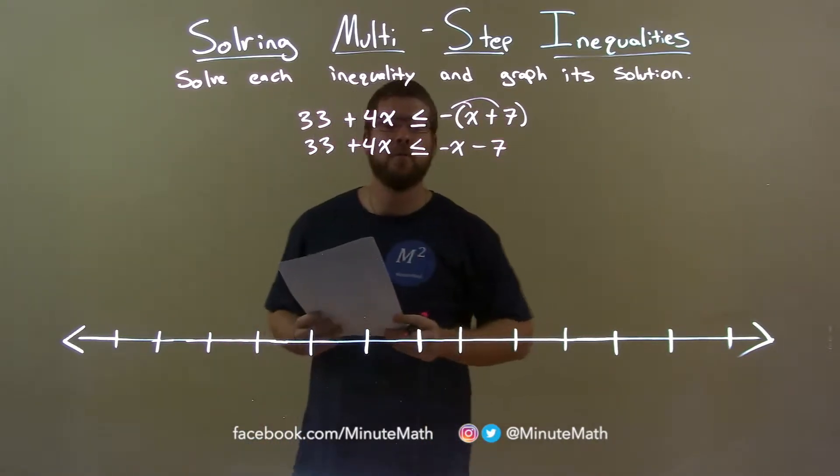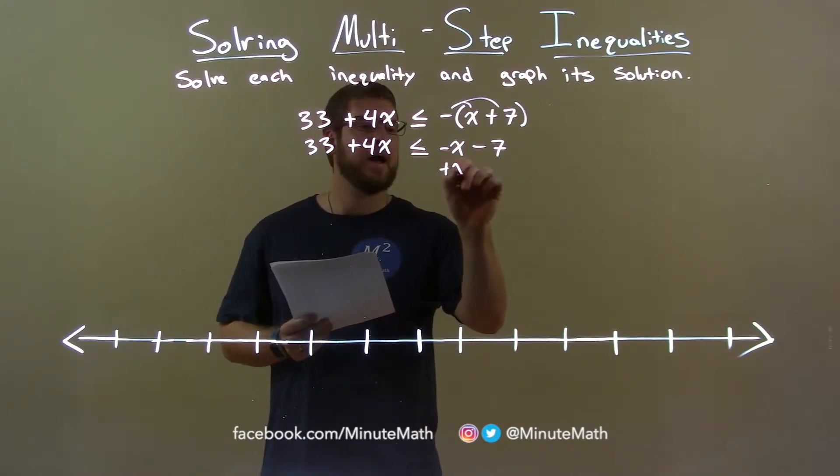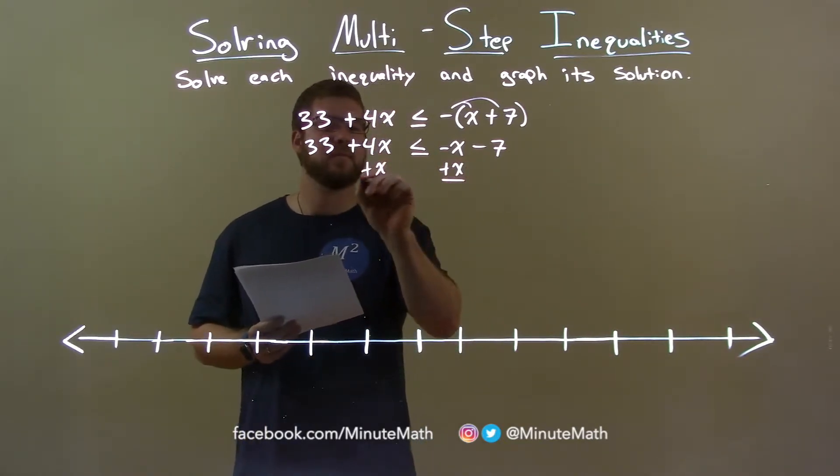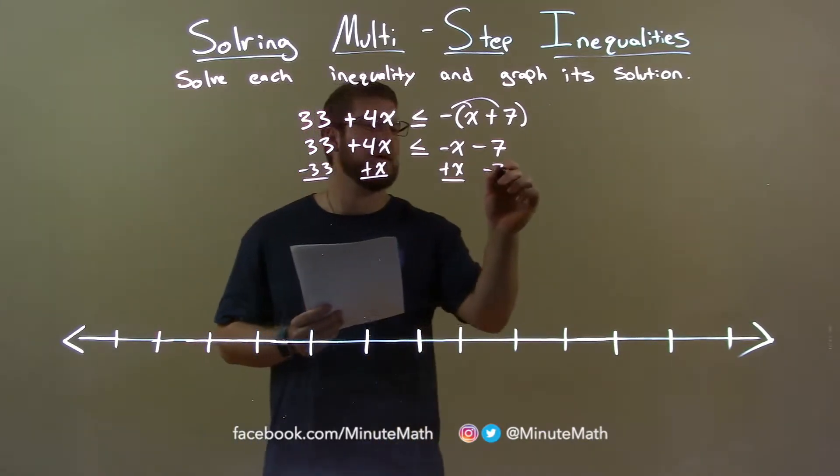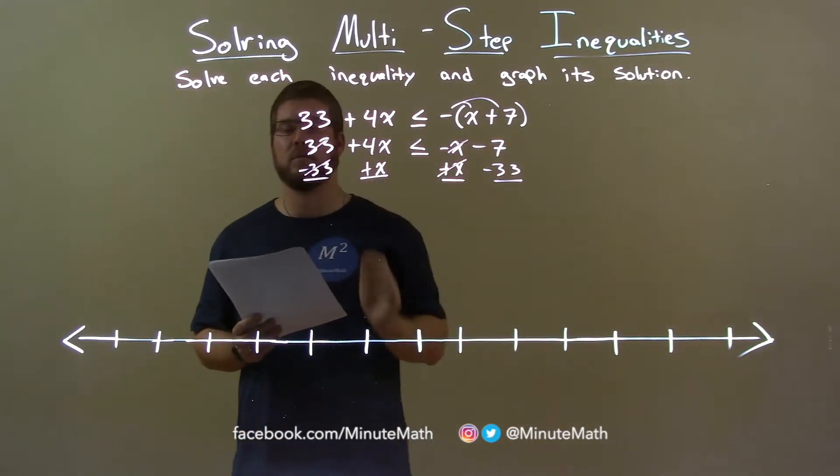So, let's bring our variables to the left, numbers to the right, by combining our like terms. Add an x here to both sides, and subtract 33 here to both sides. The x's cancel, and then the 33's cancel there.